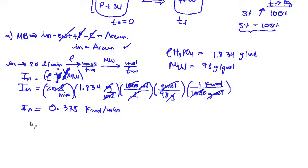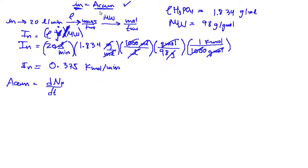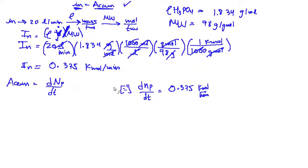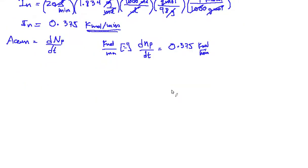We already calculated the inlet. Now we need accumulation — which is actually not a calculation but a concept: it's the derivative of the moles with respect to time. Since we are doing a mass balance on phosphoric acid, we use the total moles of P. We substitute this data and get that the derivative of moles of phosphoric acid with respect to time yields a constant. The units check out: kilomoles of phosphoric acid per minute — exactly what we have. So we are on the right path.